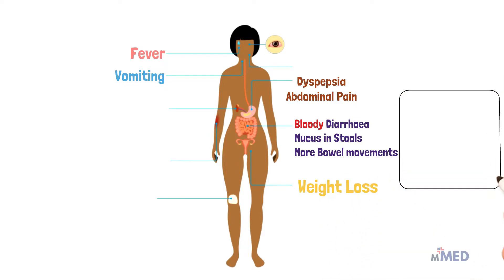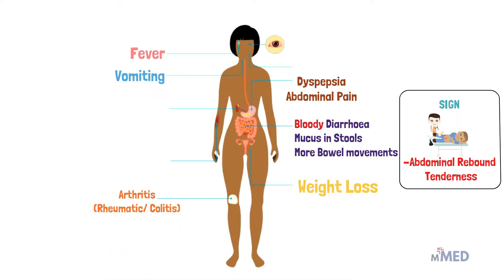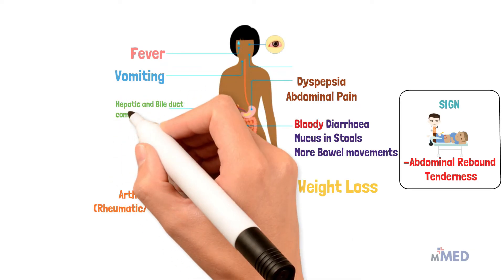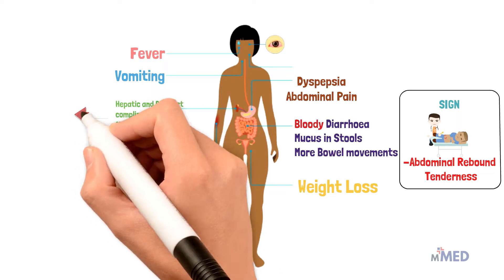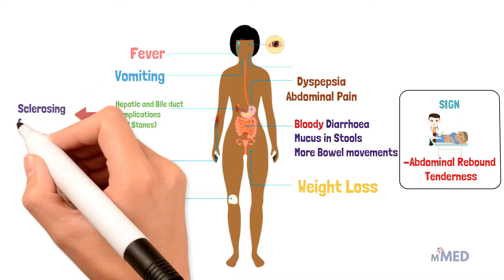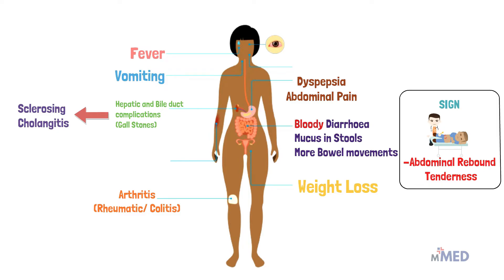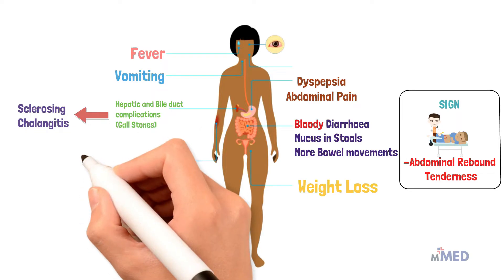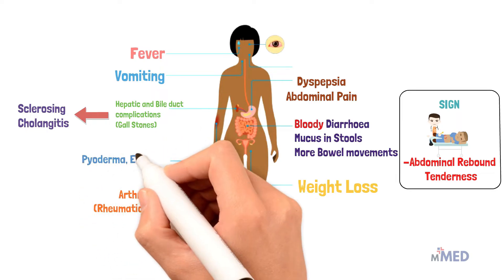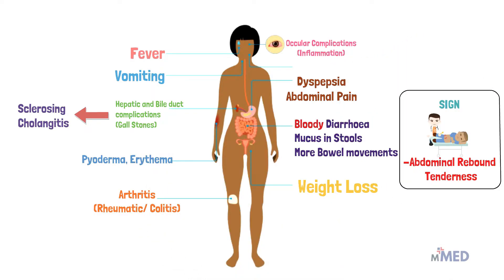Upon examination, there will be abdominal rebound tenderness, and in severe cases abdominal wall rigidity. Patients also present with arthritis, joint pains, and hepatic and bile duct complications like gallstones. A unique extra-intestinal manifestation is primary sclerosing cholangitis, an autoimmune disorder of the intra- and extra-hepatic biliary ducts. Pyoderma and erythema — skin rashes — may also be seen, along with ocular complications like conjunctivitis and oral ulcers.